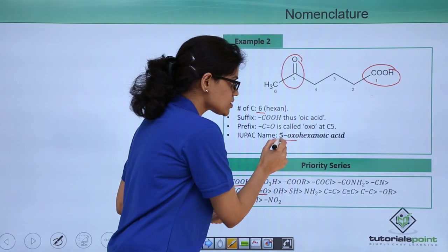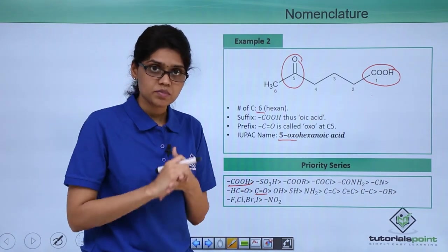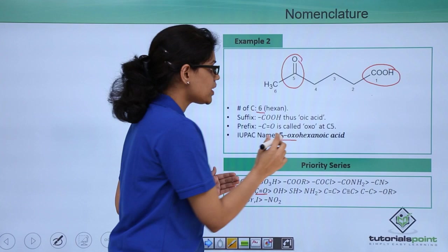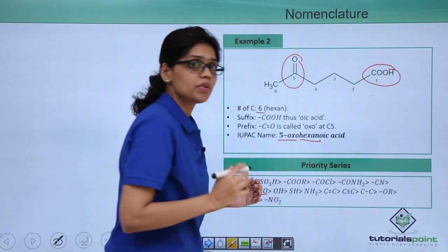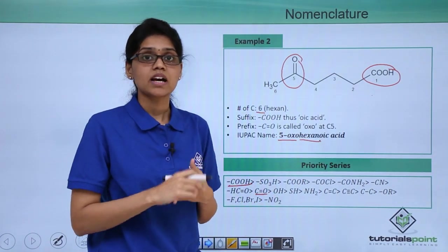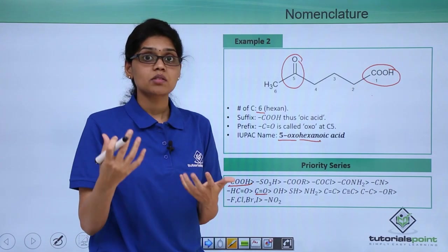Why? Because 5-oxo will form your prefix which is your substituent. Your main chain or middle part of the name would be hexane because there are 6 carbon atoms and what is the functional group that will determine your suffix.